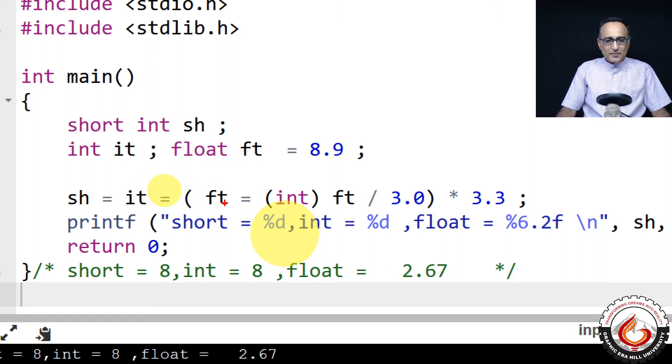Now in this particular bracket, I'm saying float is typecast of float to int upon 3.0. This is where the heart of the program lies. Float is 8.9, but when I typecast it to int it just becomes 8. 8 upon 3 is going to be something like 2.6 something or 2.6667 like that.